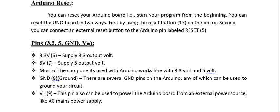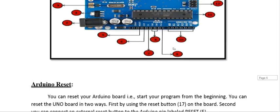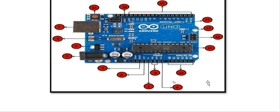VIN (Input Voltage Pin), pin number 9: this pin can also be used to power the Arduino board from an external power source like AC main supply.